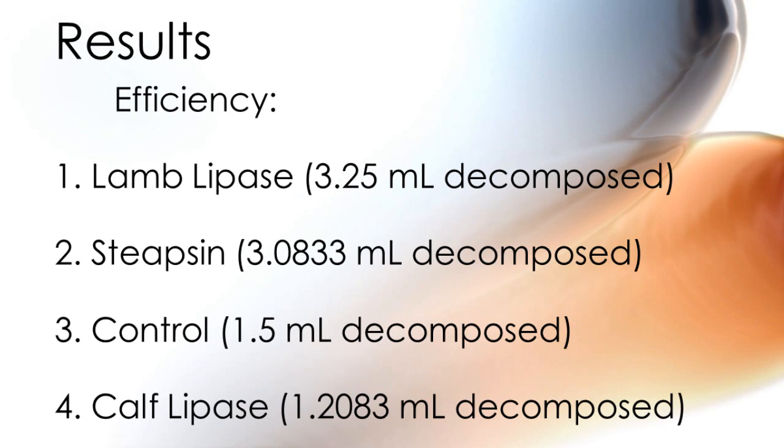The result of this experiment was that lamb lipase was most effective, followed by stepsin, then the control, and finally calf lipase.